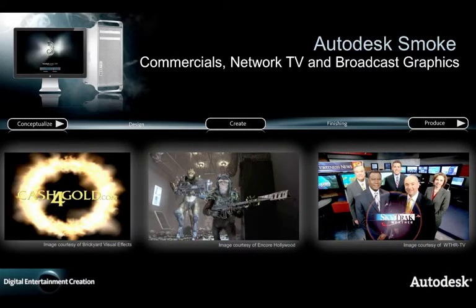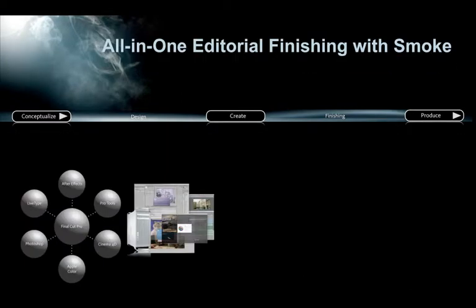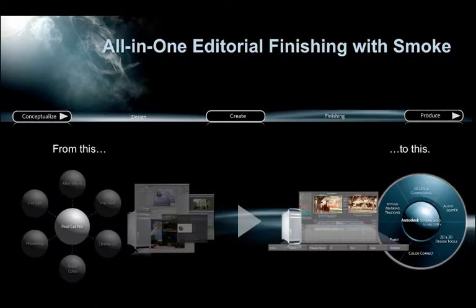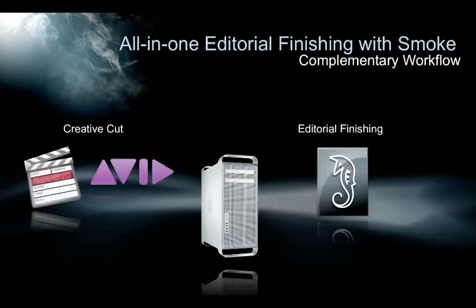Smoke is a high-end editorial and finishing system that is used everywhere — on commercials, network TV and broadcast graphics, as well as on film. It offers an all-in-one finishing solution ranging from basic editorial to color correction, compositing and advanced 3D visual effects. Since you have the option to run Smoke on the same Mac hardware you are already using for the creative cut — with Avid or Final Cut Pro, for instance — Smoke becomes the perfect complementary finishing workflow.